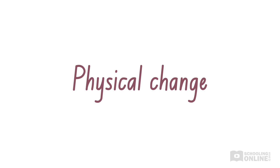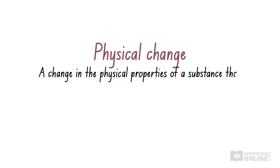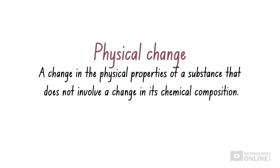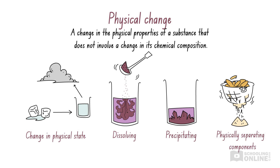The separation of a mixture involves a physical change. A physical change is a change in the physical properties of a substance that does not involve a change in its chemical composition. This means that a physical change does not involve chemical bonds being formed or broken. Examples include changing between the physical states of solid, liquid and gas, dissolving into or precipitating out of solution, and physically separating the components of mixtures.